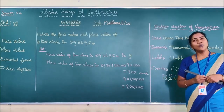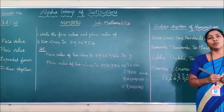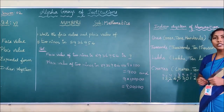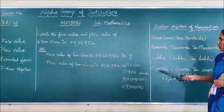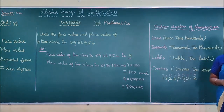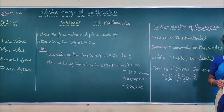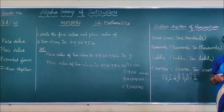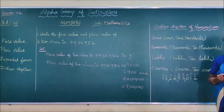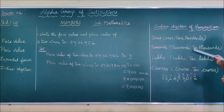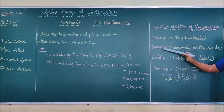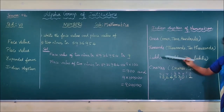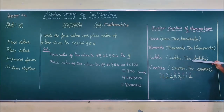Do you remember, children, how many periods are in the Indian system of numeration? There are four periods: ones, thousands, lakhs, and crores. What are the places that come under the period of ones? Ones, tens, hundreds. What are the places under thousands? Thousands, ten thousands. What are the places under lakhs? Lakhs, ten lakhs.